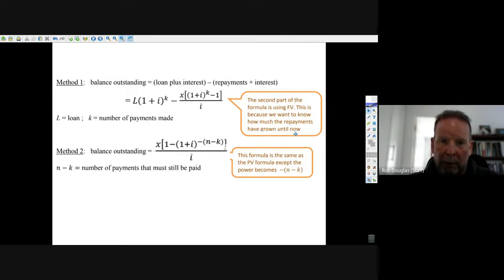The other way is to use the present value formula and just subtract the number of payments you've made from the total number of payments. In other words, the number of payments you have left, so you go n minus k. If you put that in the present value formula, it's a little bit simpler and gives you the answer right away.